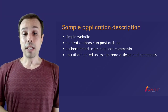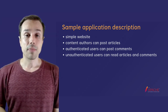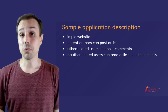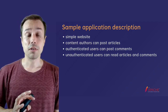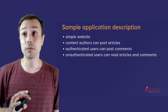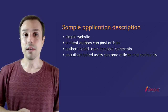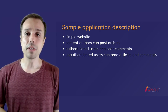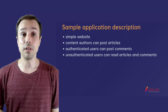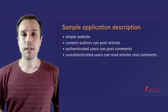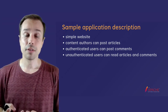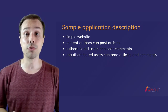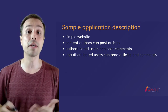The application that we would like to describe in terms of a threat model is very simple. We have three bullet points: a set of content authors that can post content and articles on the website; authenticated users that can post comments; and unauthenticated users who can read those articles and those comments. Higher-privileged users can do what lower-privileged users can do, so content authors can also read articles and comments, and they can also post comments.